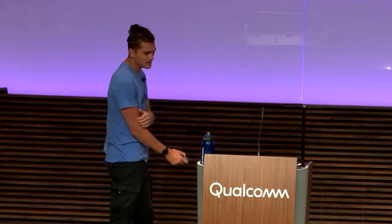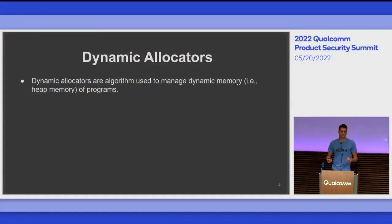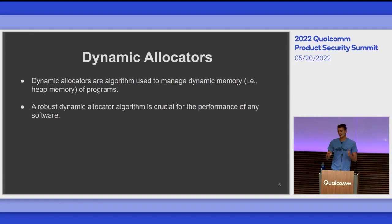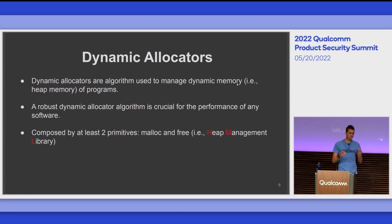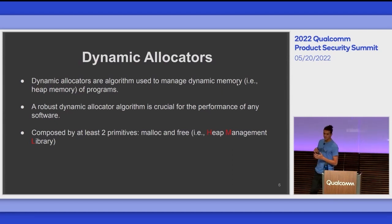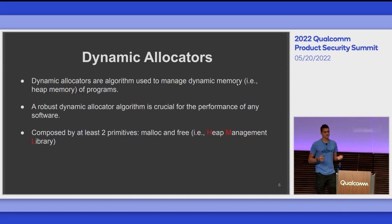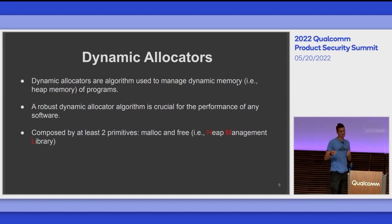Let's break down the title first. A dynamic allocator is an algorithm used to manage dynamic memory — in other words, the heap memory of programs. A robust dynamic allocator algorithm is crucial for the performance of any software. It's usually composed of at least two primitives, malloc and free, which we'll call the heap management library, or HML.